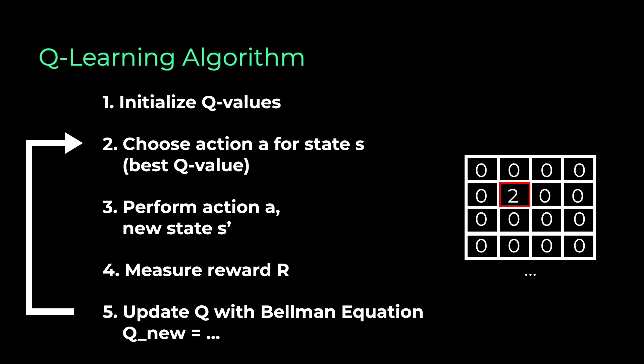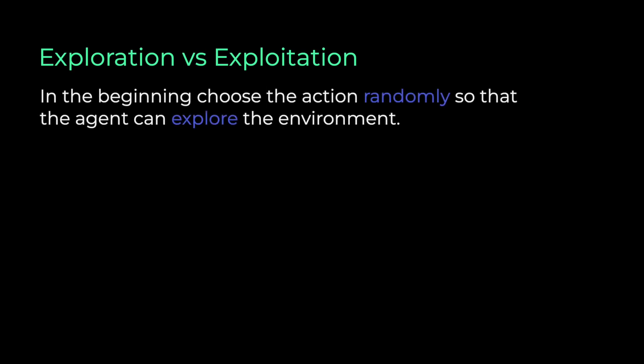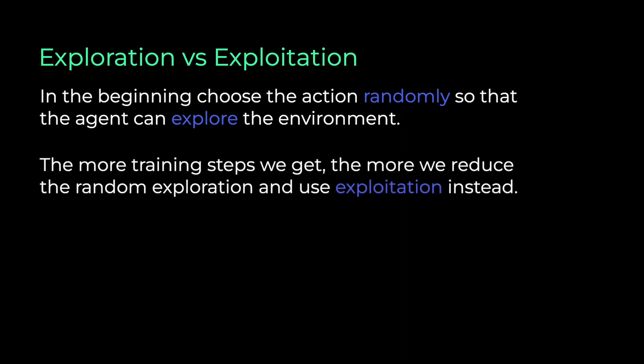Now a few questions may appear. First, how can we choose the best action in the beginning when all our values are zero? This is where the exploration versus exploitation tradeoff comes into play. In the beginning, we choose the action randomly so that our agent can explore the environment. But the more training steps we get, the more we reduce this random exploration and use exploitation instead. So we make use of the information we have. This tradeoff is controlled in the calculations by a parameter that is usually called the epsilon parameter.